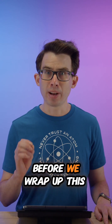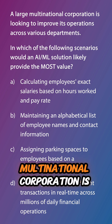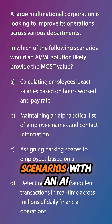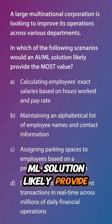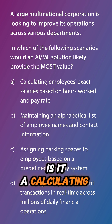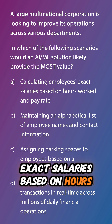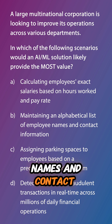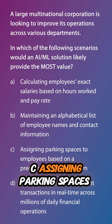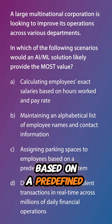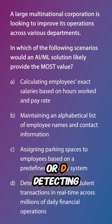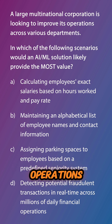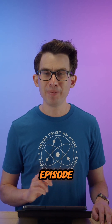Let's do a review question before we wrap up this episode. A large multinational corporation is looking to improve its operations across various departments. In which of the following scenarios would an AI and ML solution likely provide the most value? Is it A, calculating employees' exact salaries based on hours worked and pay rate? B, maintaining an alphabetical list of employee names and contact information? C, assigning parking spaces to employees based on a predefined seniority system? Or D, detecting potential fraudulent transactions in real time across millions of daily financial operations? We'll review this question in our next episode.